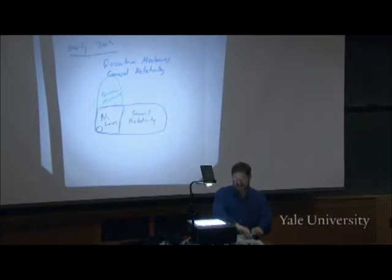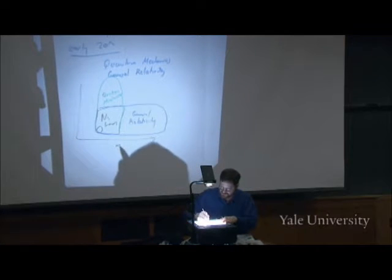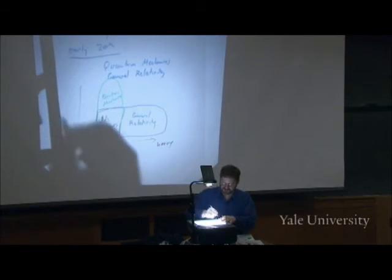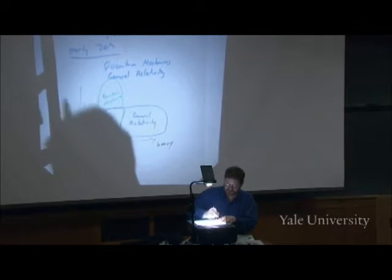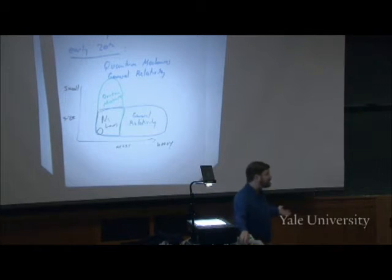Let me make these axes specific. I don't like Venn diagrams when they don't tell you what you're actually plotting. This is mass, so heavy things are when relativity kicks in. This is size, and so small things are when quantum mechanics kicks in. But you can see the problem.